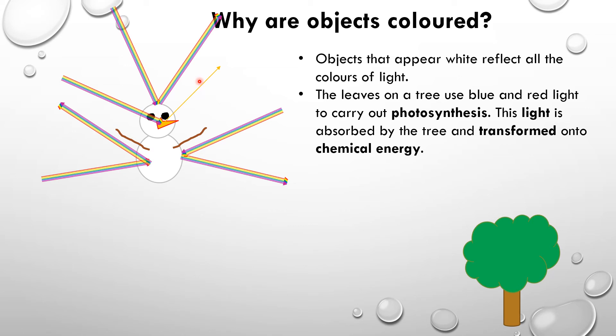the leaves take the energy from the light, in particular they take the blue and the red, or the colours around the blue, the indigo, violet, blue, the red, orange, yellow, so they take those colours and they use the energy from that part of the light to carry out photosynthesis.